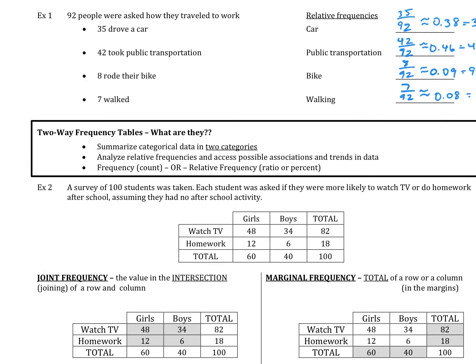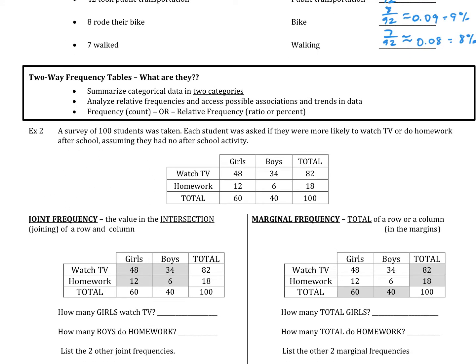Now let's talk about two-way tables. Two-way tables summarize categorical data into two categories, which we call categorical variables. Within those categorical variables, you can have two values, three values, or as many values as you want, as long as you have two categorical variables. We can also analyze relative frequencies to access possible associations and trends in the data. The frequency is just the count, and the relative frequency is the ratio or percent.